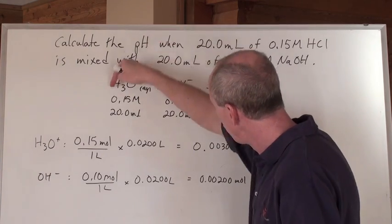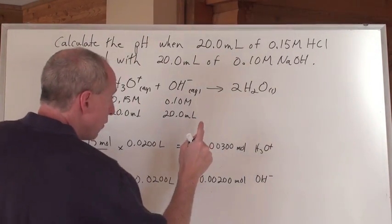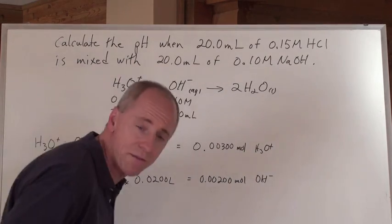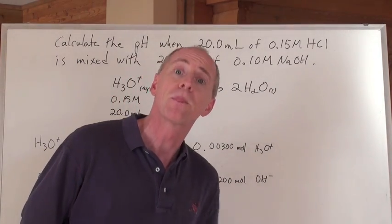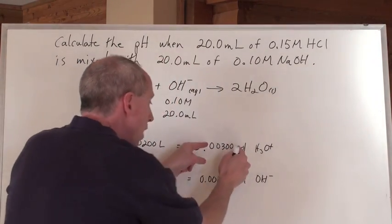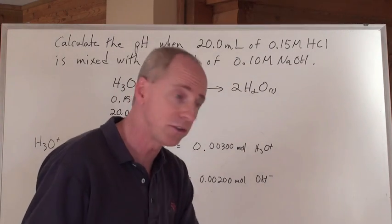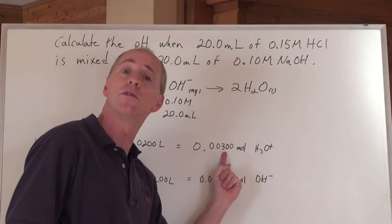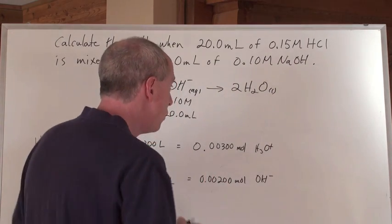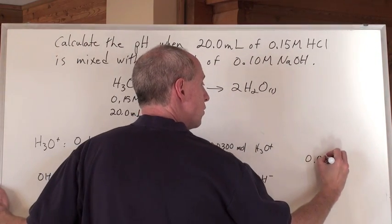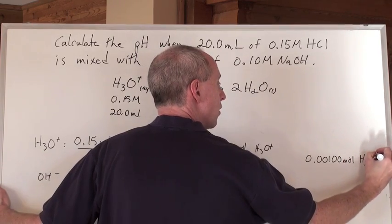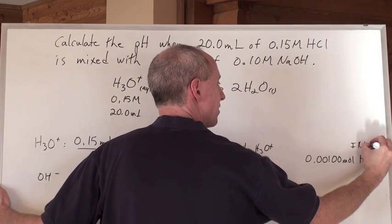Now look, they react in a one to one ratio. For every 0.003 here, you would need 0.003 here, but you don't have that. You have 0.002. That means then that you've got more hydronium than hydroxide, and it means also then that 0.002 here reacts with 0.002 here. And what does it leave you with in the end? You will have 0.00100 moles of hydronium that are going to end up to be in excess.